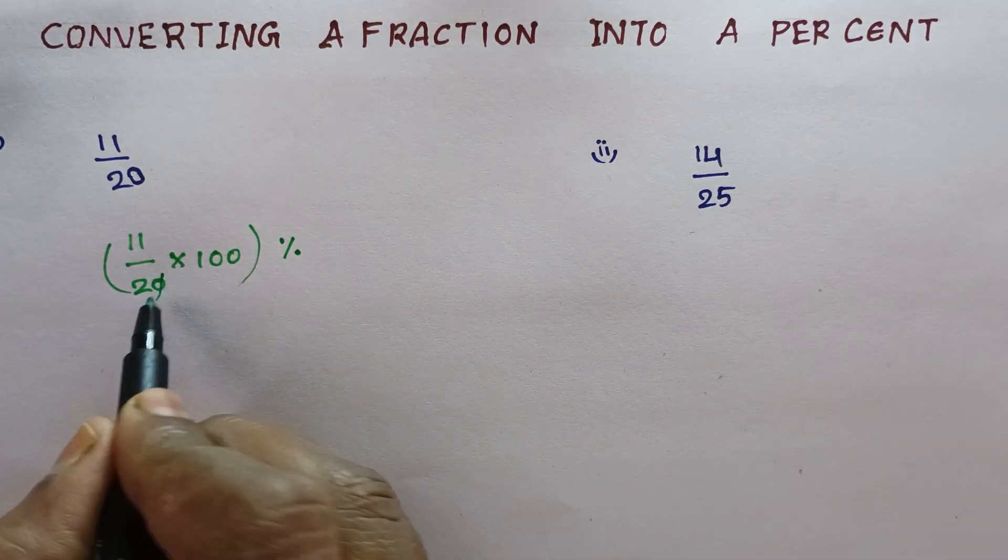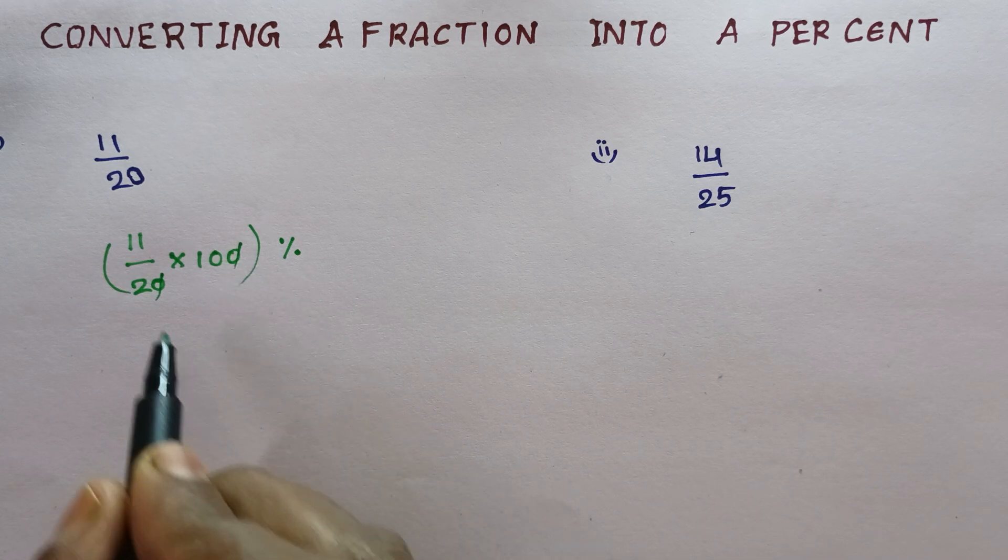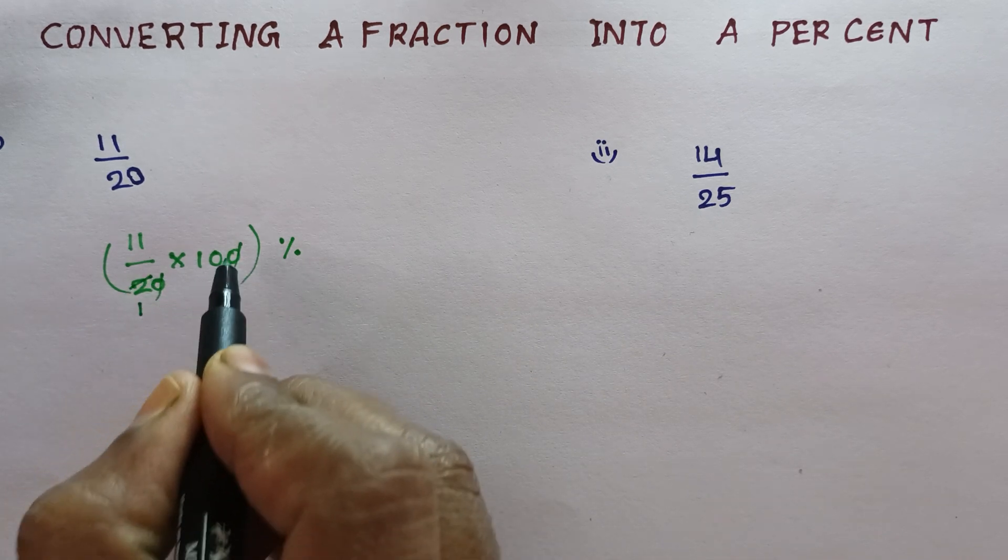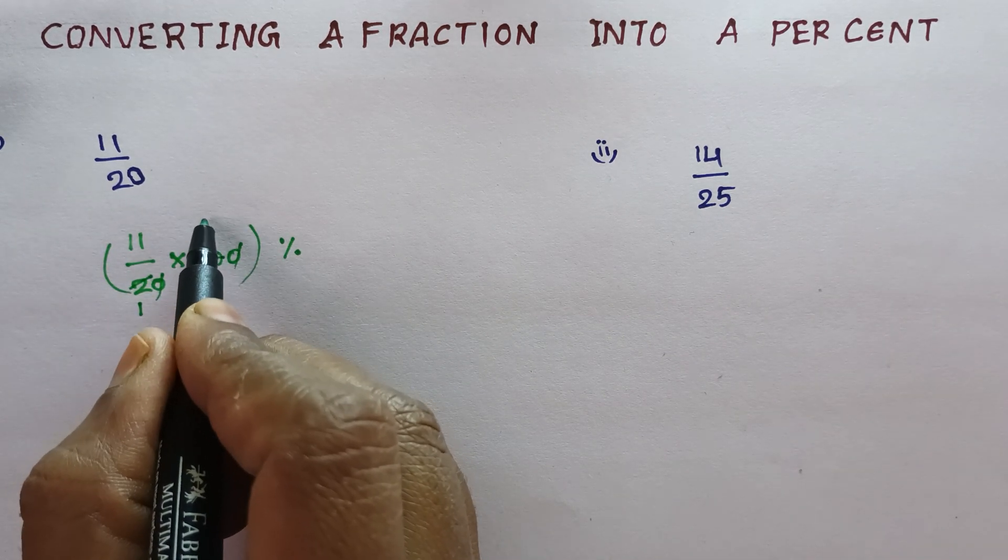So, 0, 0 get cancelled. 2 1s are 2, 5s are 10.